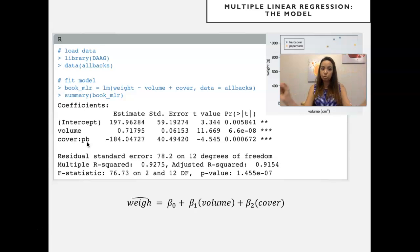Controlling for volume. So for similar volumes, the paperback, which is coded 1, will have 184 grams less than the hardcover book. So hardcover is coded as zero because it's not shown up here. The other one that's shown up here is paperback. So this you've learned last time.